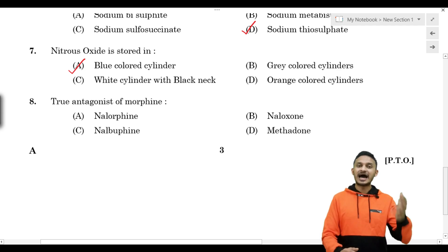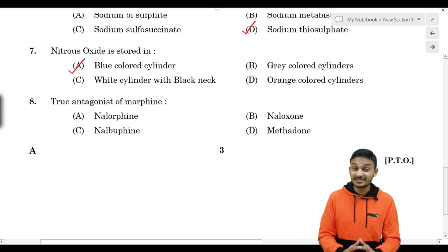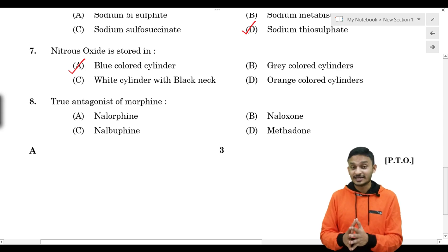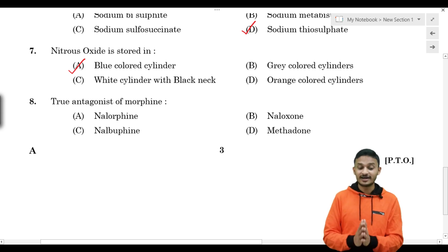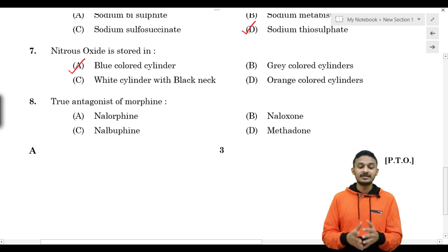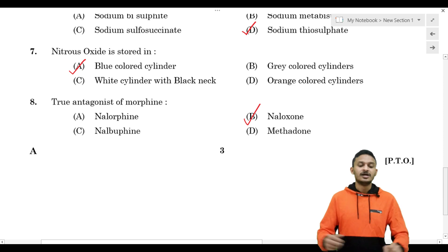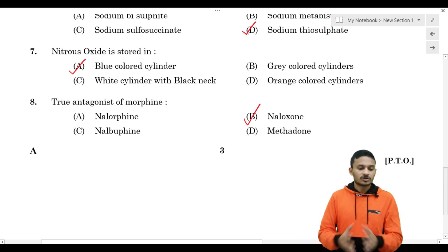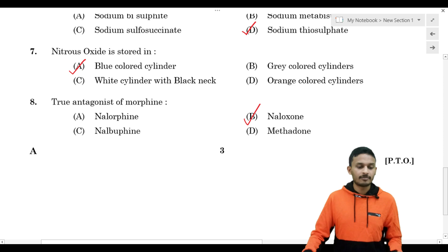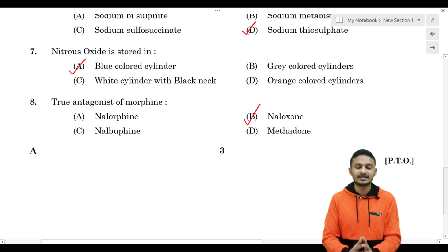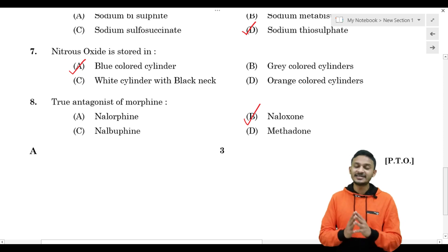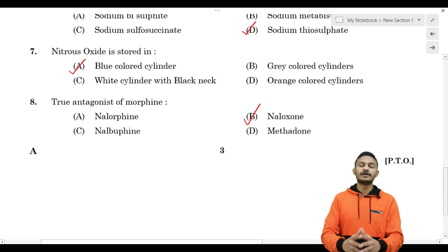Question number 8: the true antagonist of morphine is naloxone. This question was also covered in a previous video (question 003/2021). Question 6: sodium thiosulfate — its synonym is hypo or antichlor.